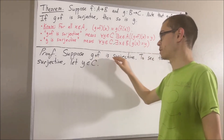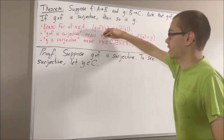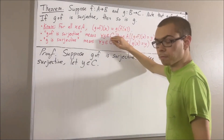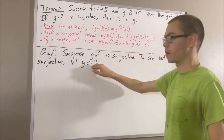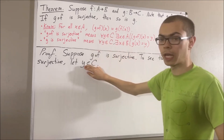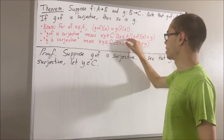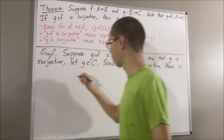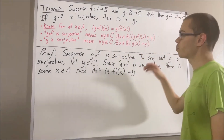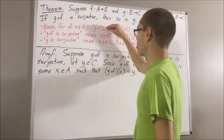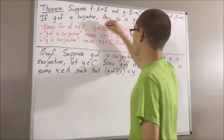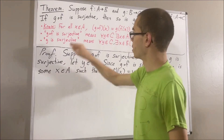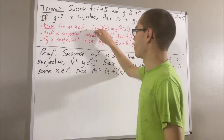We know that g compose f is surjective, which means this statement is true and works for every element in C. So in particular it must work for the element y that we have here. Taking y to be the y we have here, we have that there exists an element x in A such that g compose f evaluated at x is equal to y. But remember, for all x in A, g compose f evaluated at x is equal to g of f of x, and this works for every element in A. So in particular it must work for the x that we have here.